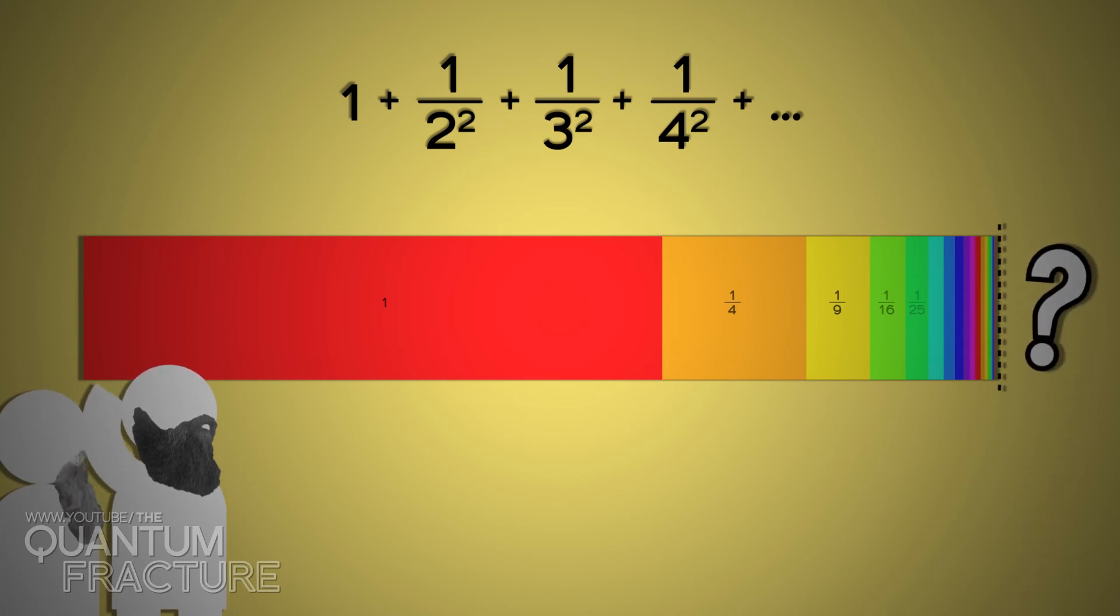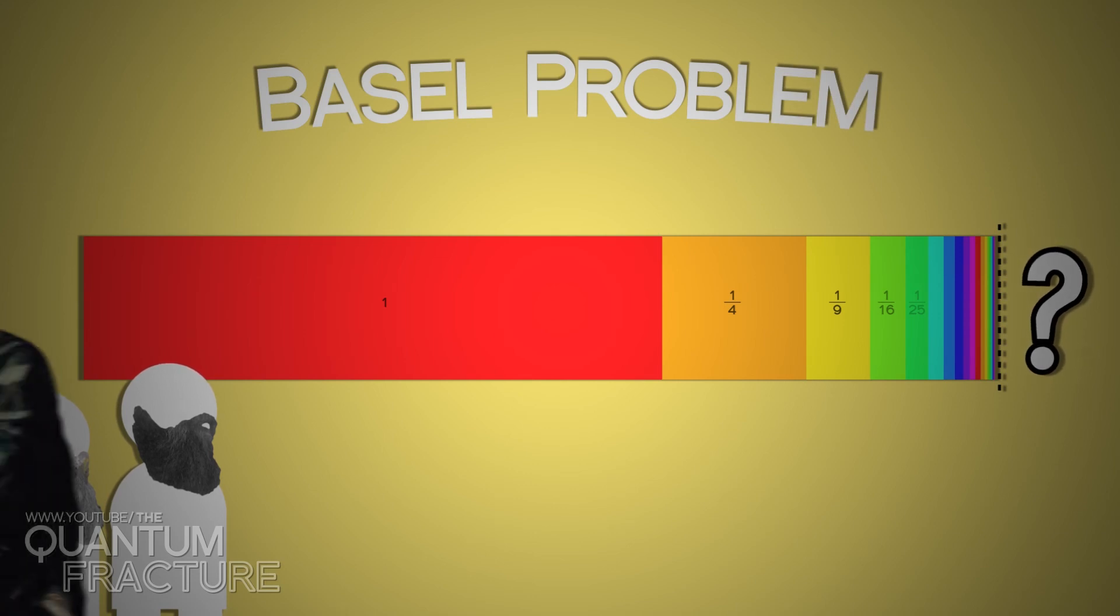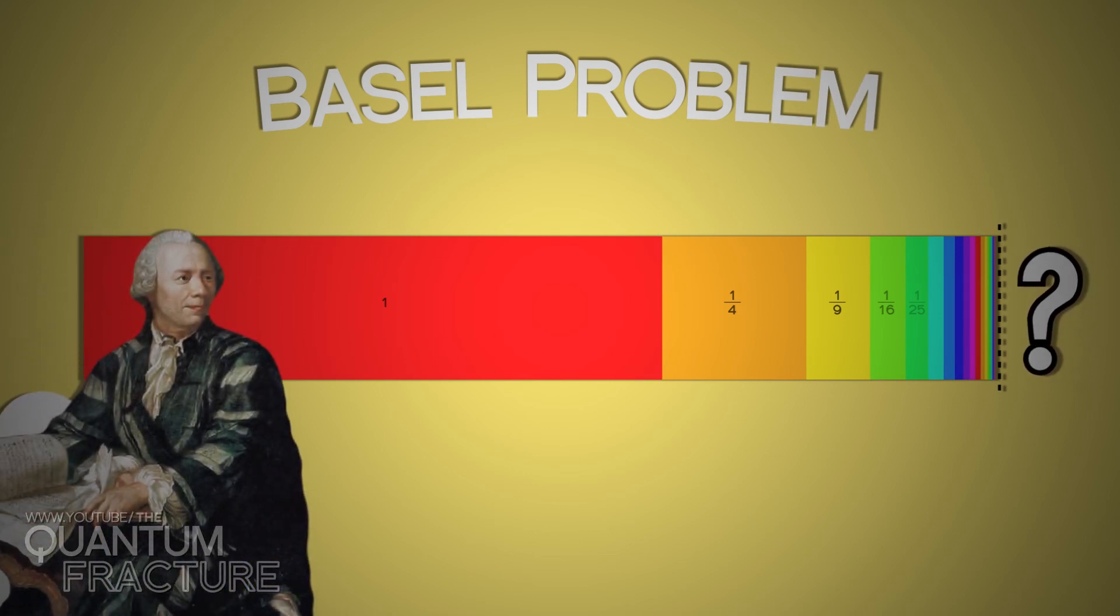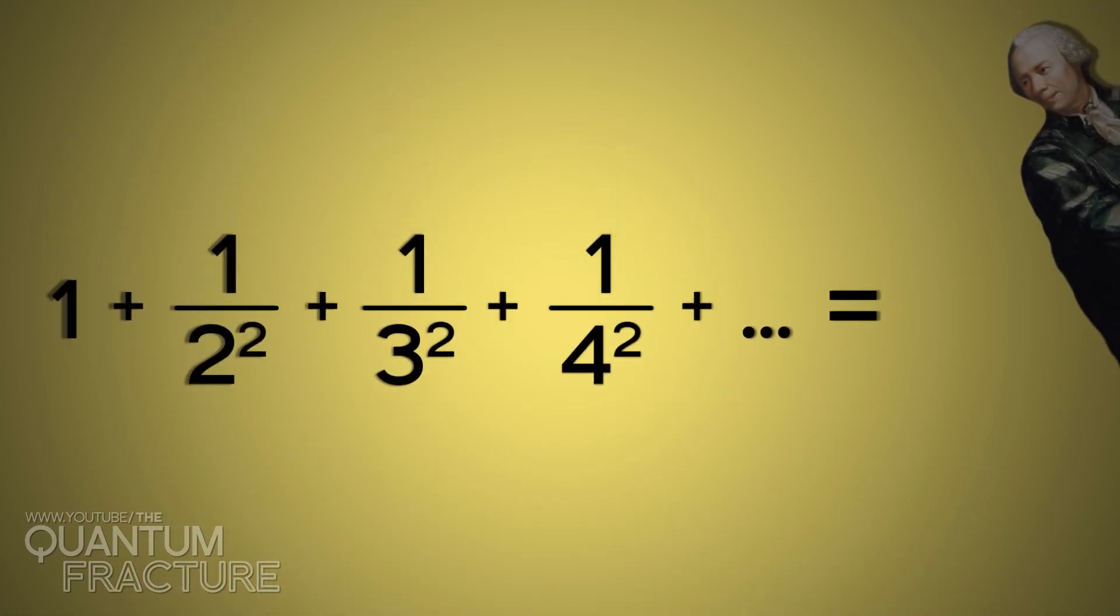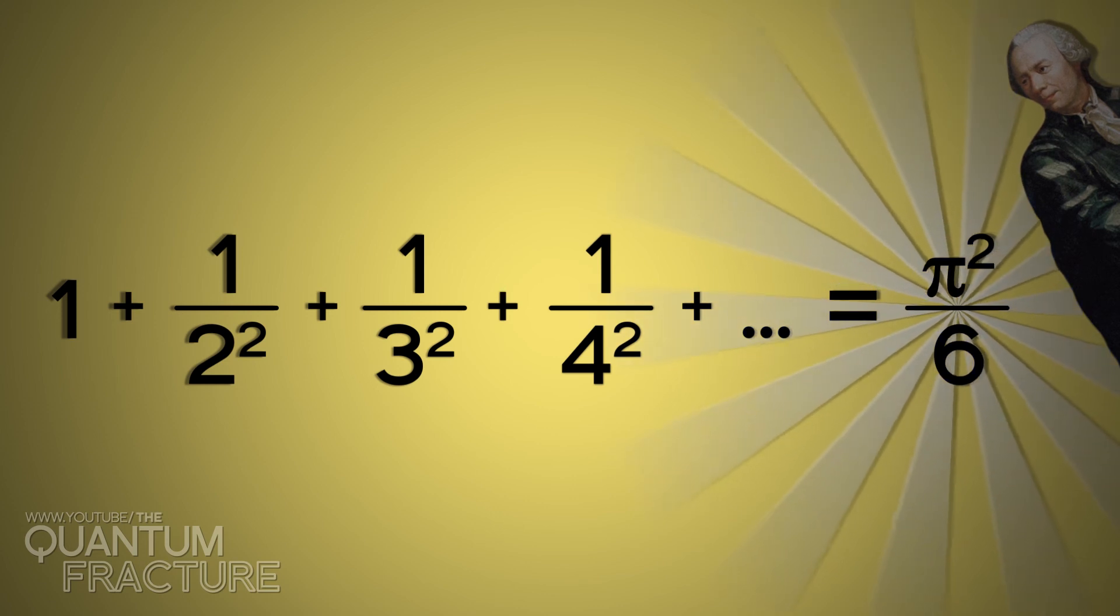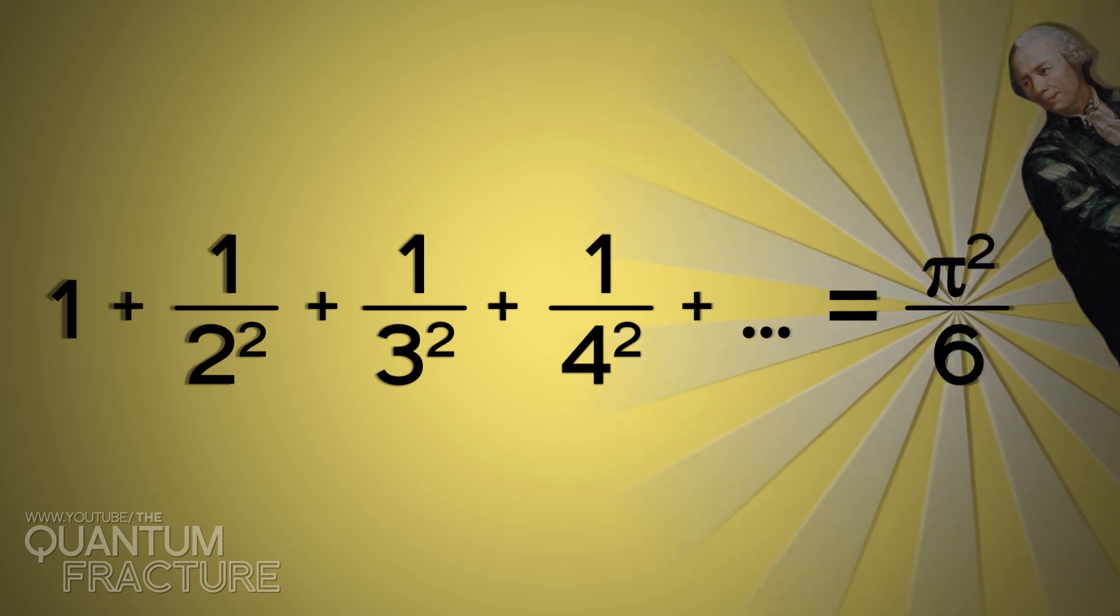Knowing accurately the value of this figure was one of the challenges of the time, the so-called Basel problem, solved by one of the bosses in science, Mr. Euler. His conclusion was that the addition equals pi squared divided by 6.